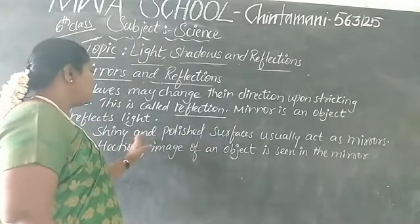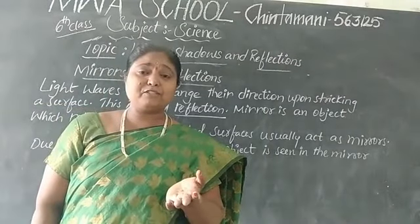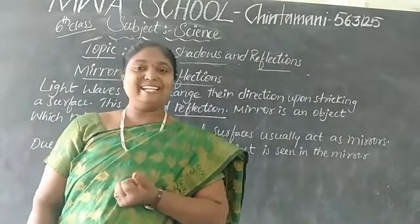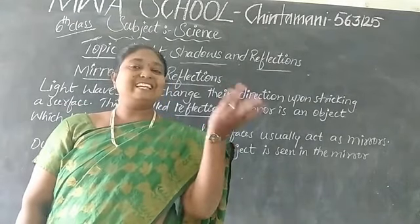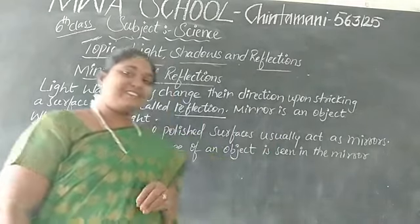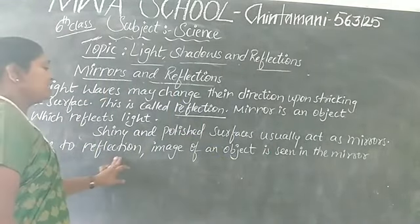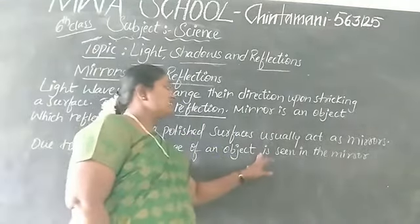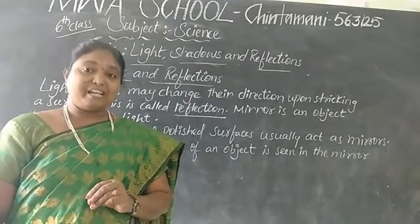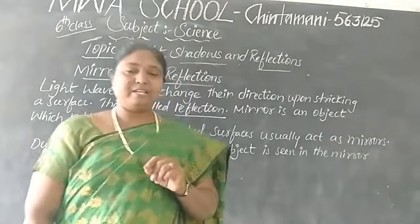Shiny and polished — can you give an example? A newly bought steel plate: if you look at it, like a mirror, we can observe our image. Due to reflection, the image of an object is seen in the mirror. Due to reflection, we can see the object in the mirror.